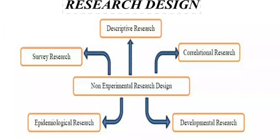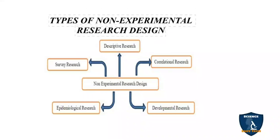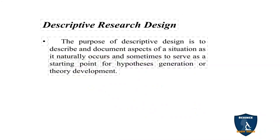You can remember these types using the mnemonic DECS: D stands for descriptive research and developmental research, E for epidemiological research, C for correlational research, and S for survey research. These are the types of non-experimental research design.